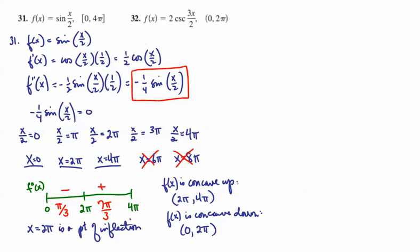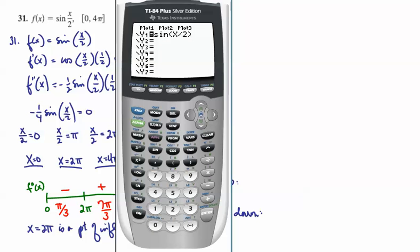We'll bring up the graphing calculator and see how we did with this. So I have the function there, sine of x over 2. My window is set from 0 to 4pi. Remember that you can actually just type in 0 to 4pi in steps of pi. I go from negative 2 to positive 2. When I graph that...